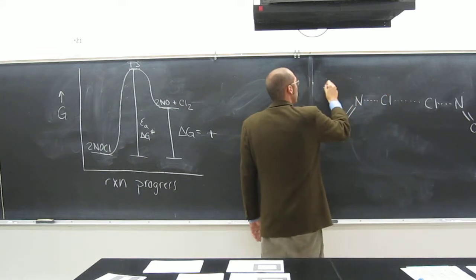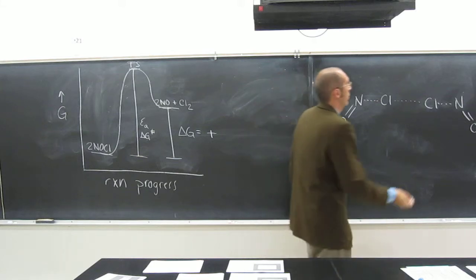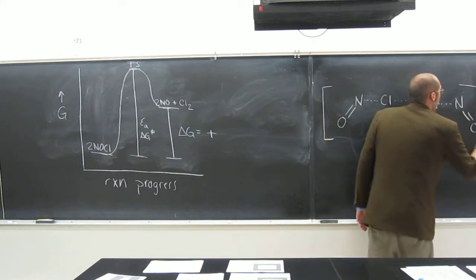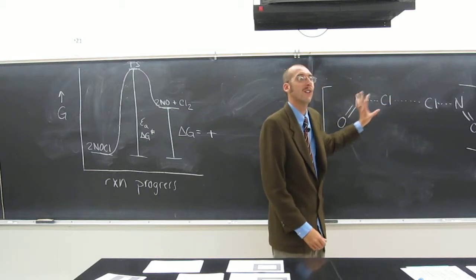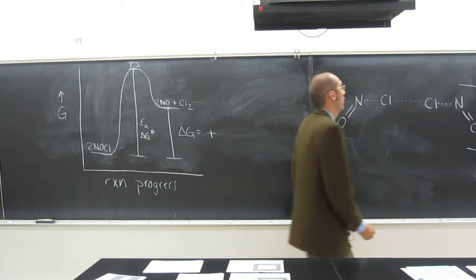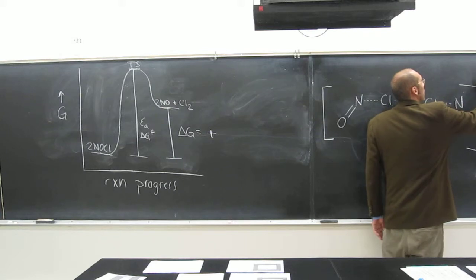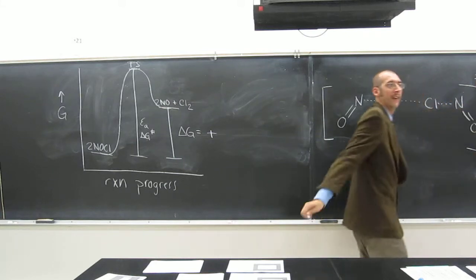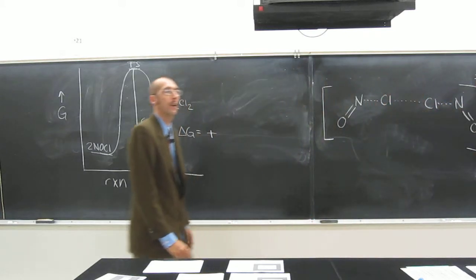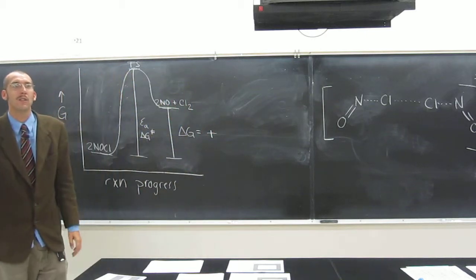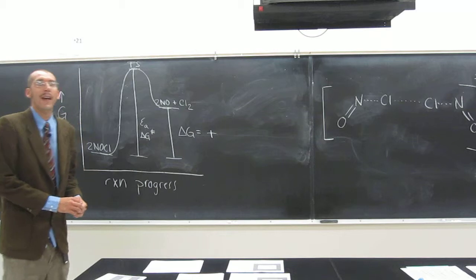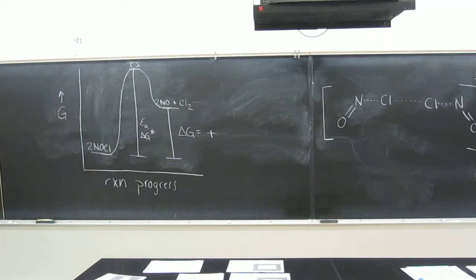So a lot of times you'll see this in brackets, okay? Because it's not an actual, what we call species or molecule. And a lot of times you'll also see it with the double dagger up there, just to clearly indicate to you that that's the transition state, and not like an intermediate, which is more stable than the transition state.